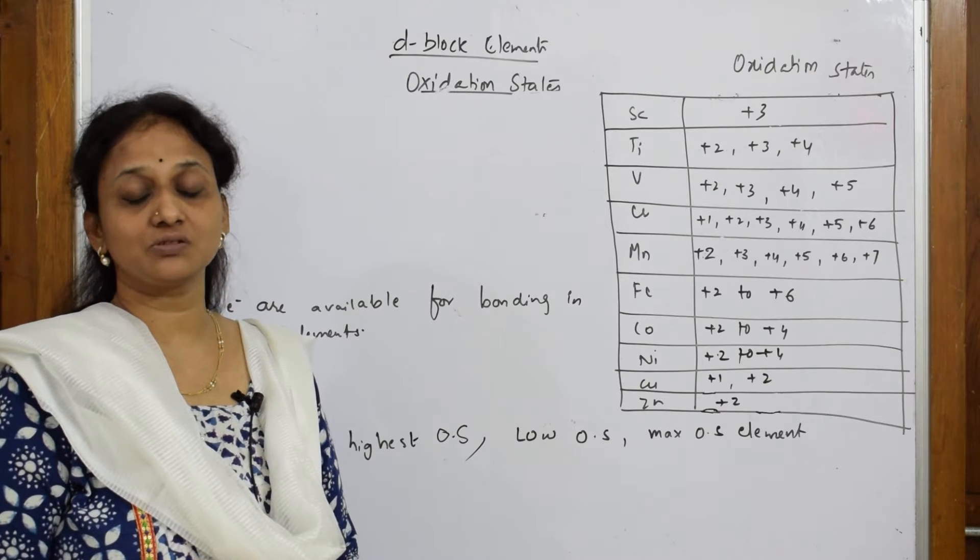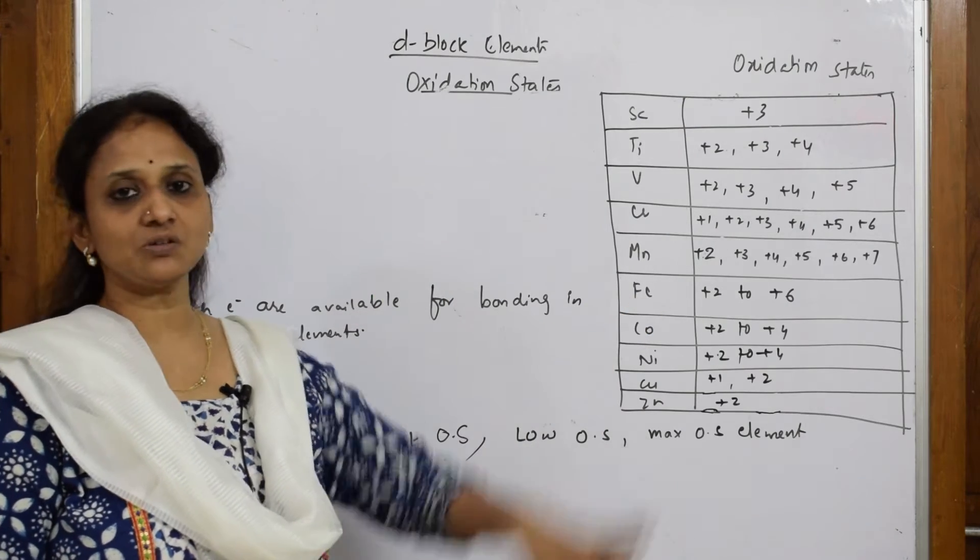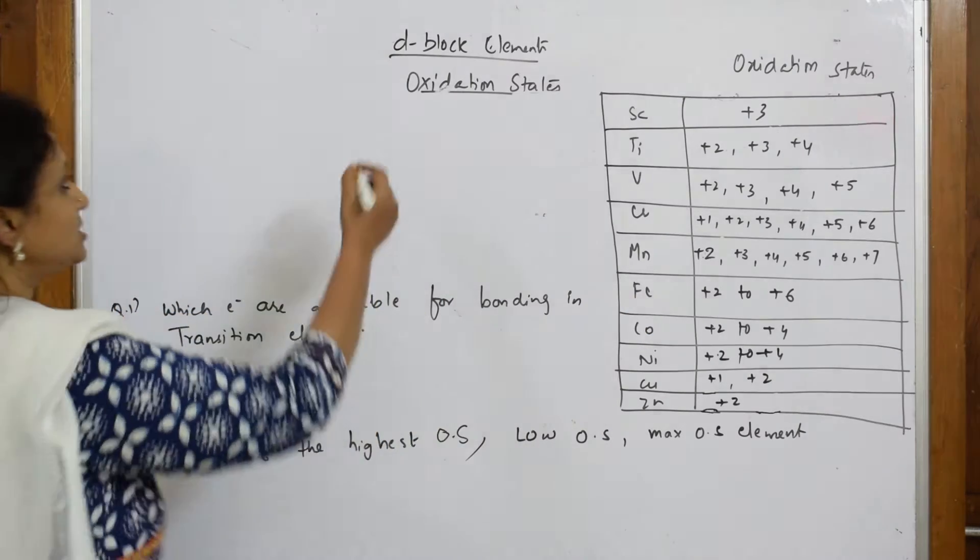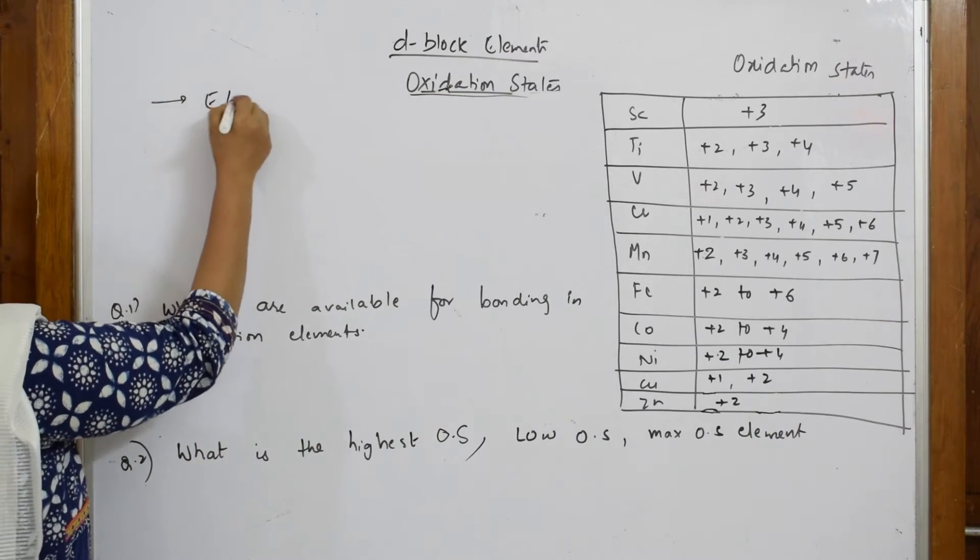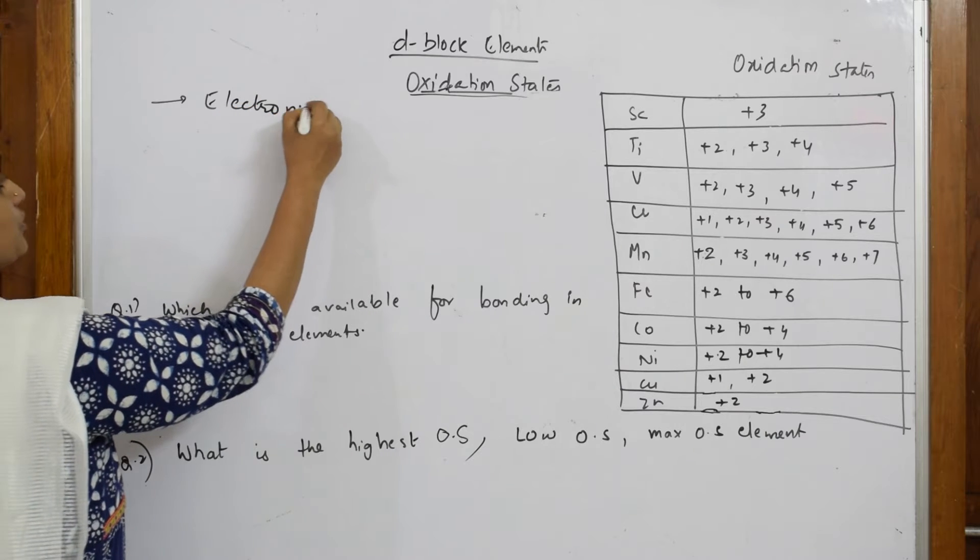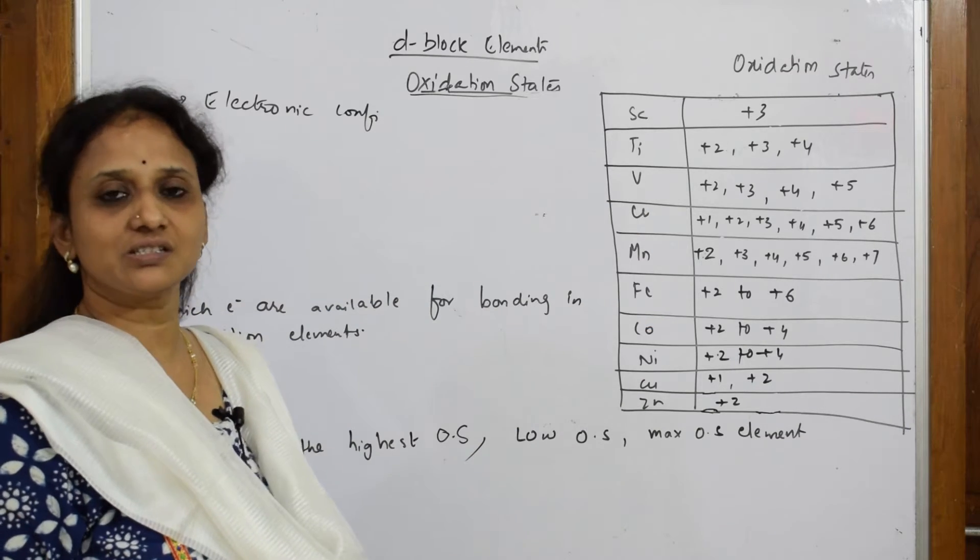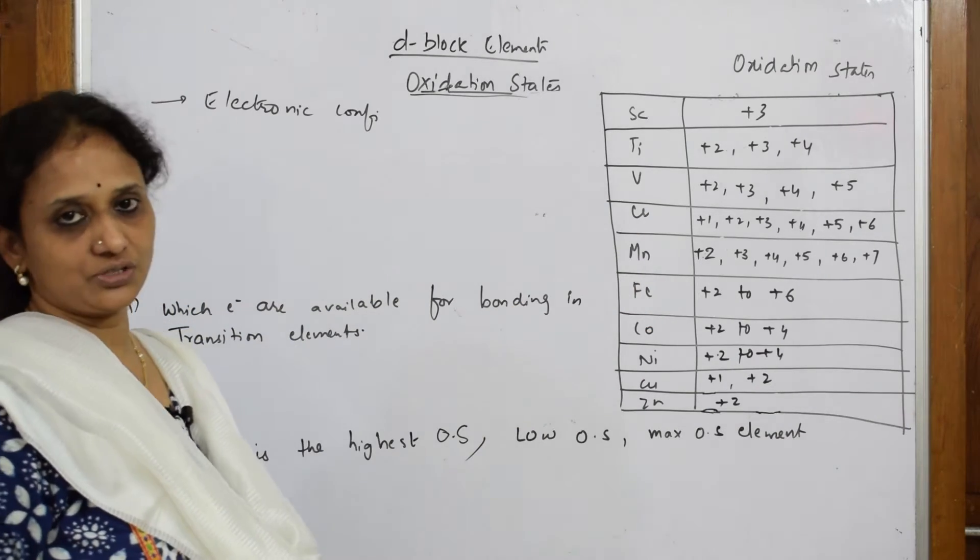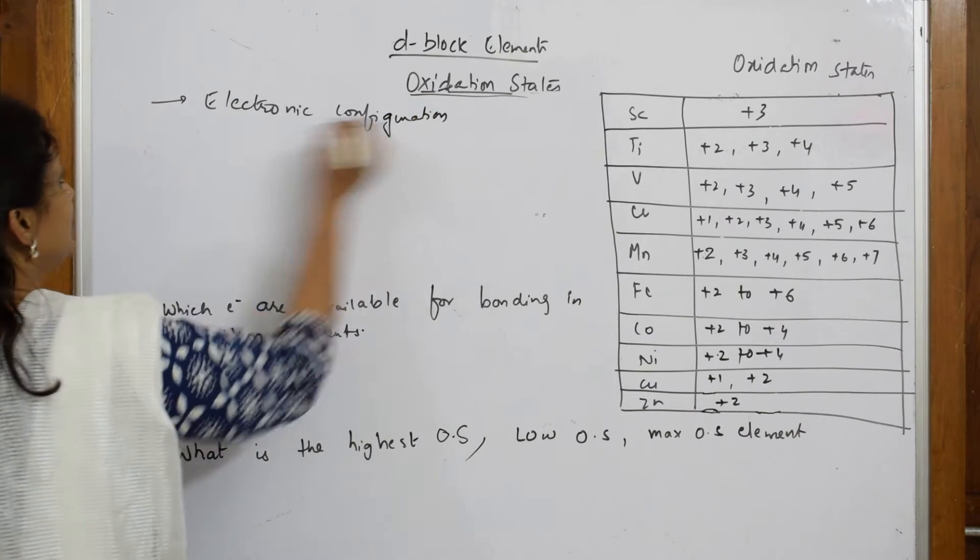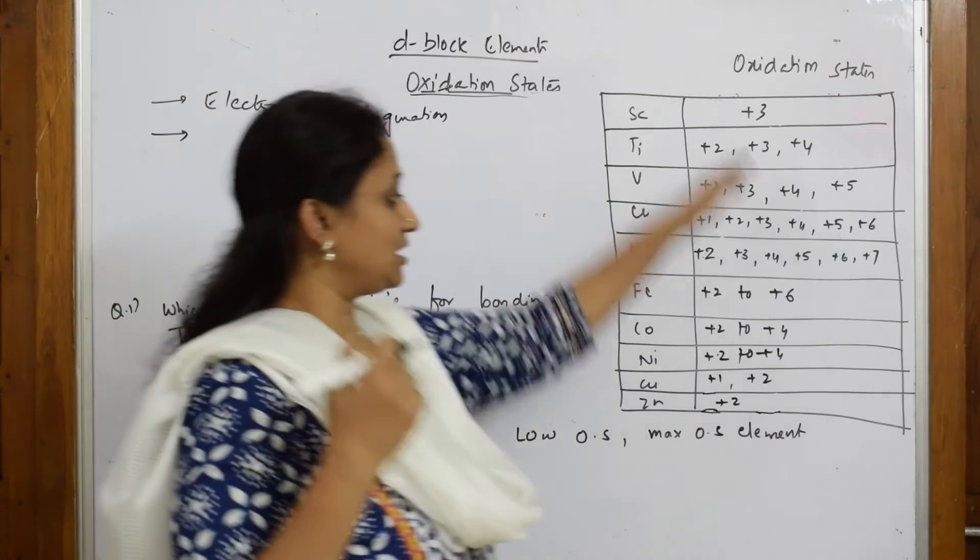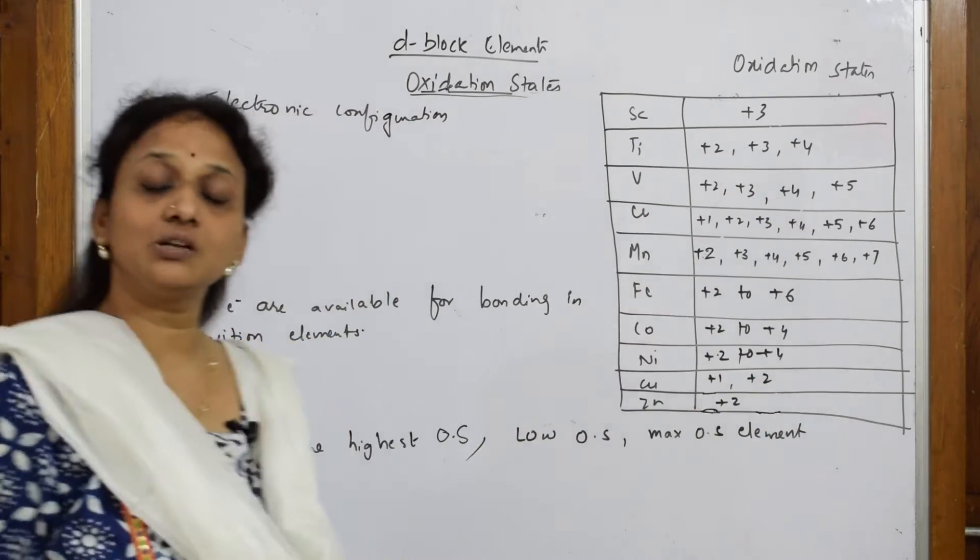When I speak about transition elements oxidation state, on what basis does oxidation state depend? Oxidation state depends on a few concepts. First, electronic configuration - I'm going to calculate how many oxidation states it's showing, how many electrons it can donate. The next concept is this property of showing so many electrons also depends upon stereochemistry of that molecule.